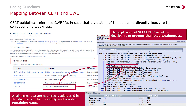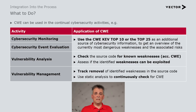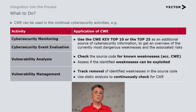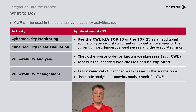So let's summarize how CWE can be used for continual cybersecurity activities. For monitoring and event evaluation, it can be an additional source of cybersecurity information, but this is not the main focus of these weaknesses. The strong point is really when you use it for vulnerability analysis and vulnerability management. For vulnerability analysis, you can check your source code for known weaknesses and then assess if these identified weaknesses can be exploited. For vulnerability management, you have to track the removal of identified weaknesses in the source code, and you can use static analysis tools to continuously check for CWE.